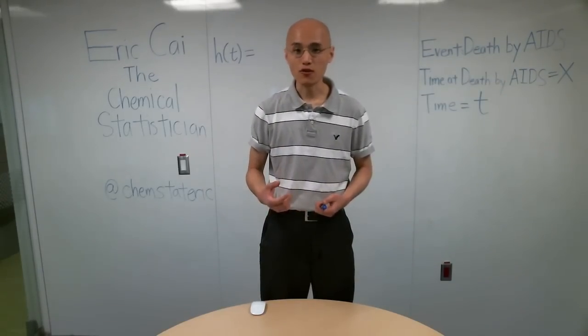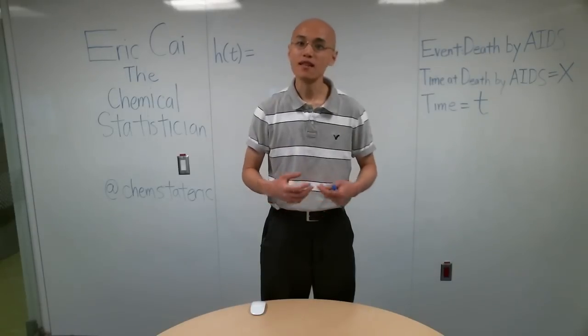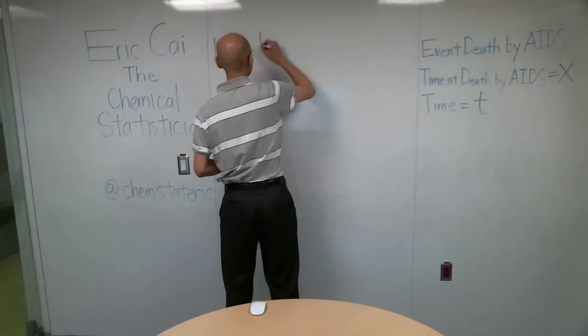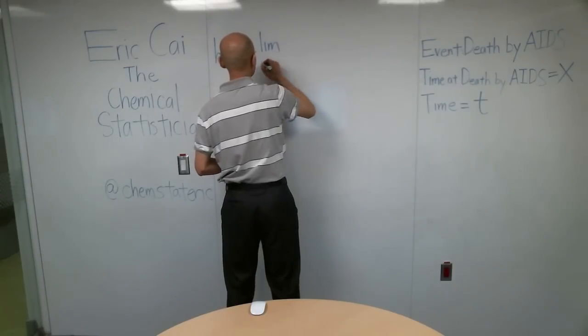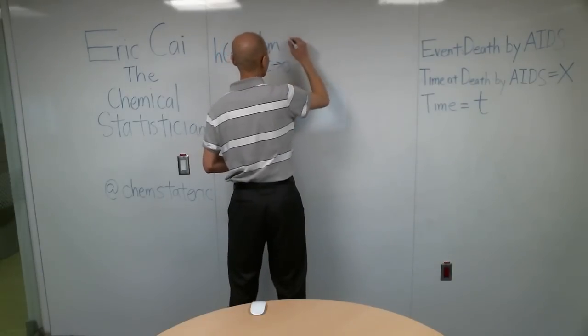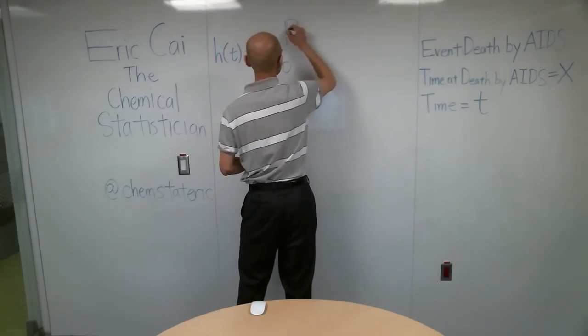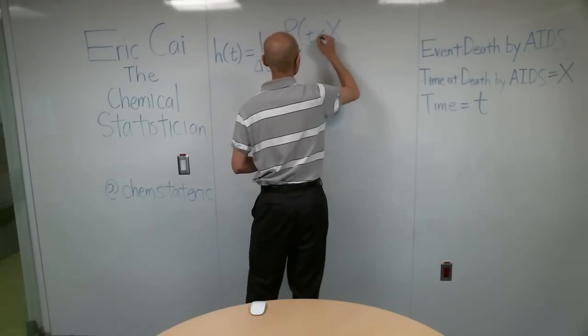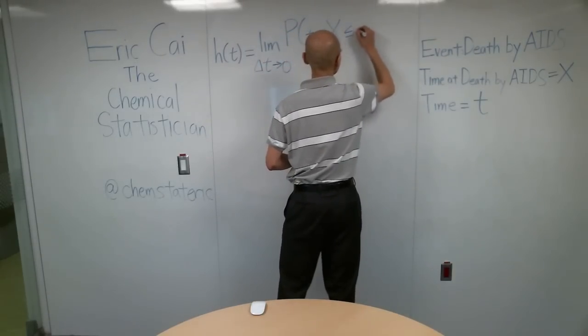So the hazard function, which is a function of time, H of T, is defined as the limit as delta T goes to zero of the probability that X is in some interval between T and T plus delta T,